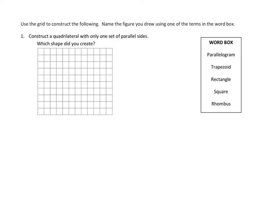Let's take a look in particular at problem number one. It asks us the following: construct a quadrilateral with only one set of parallel sides. Only one set of parallel sides, and we're going to do that here on our graph paper. So one set of parallel sides.